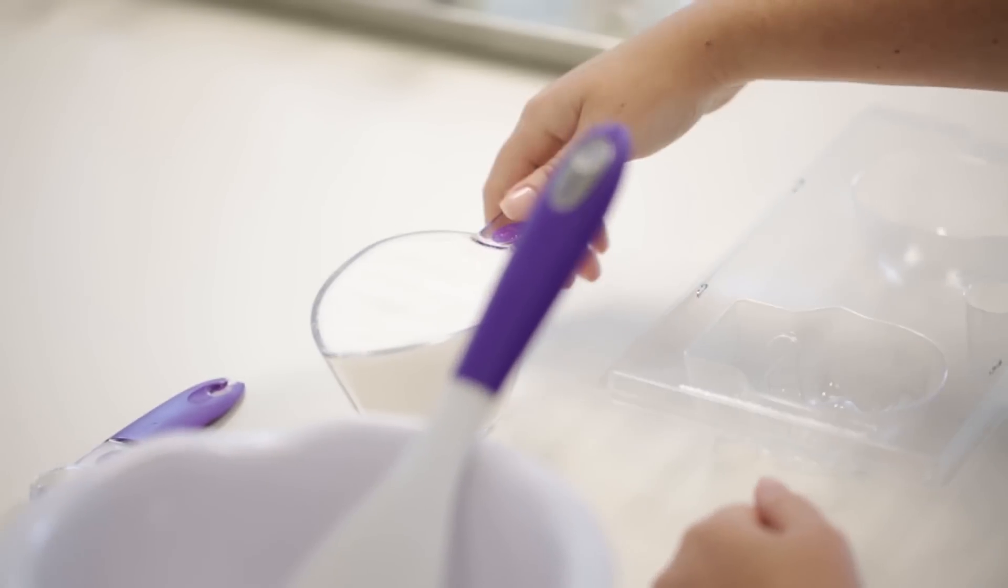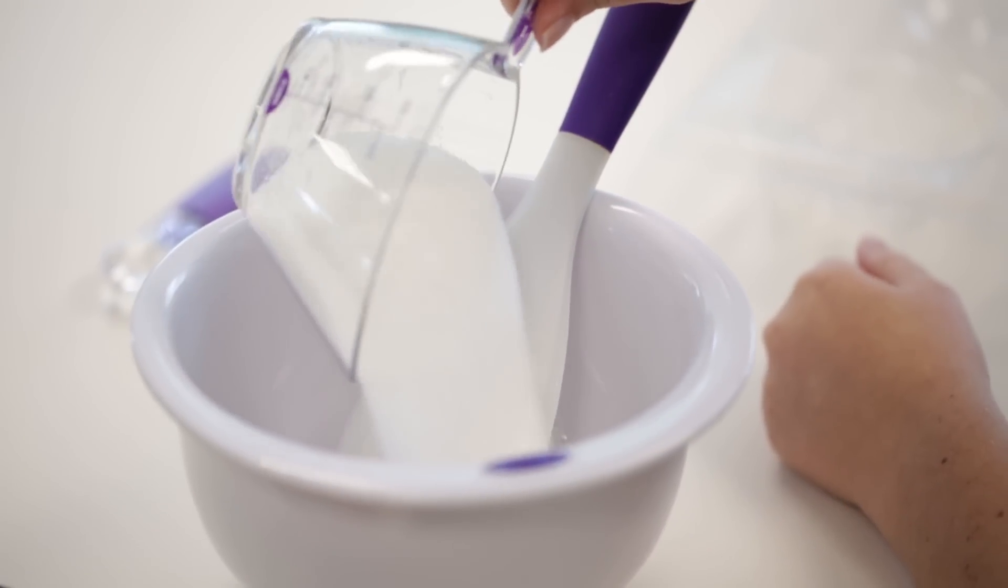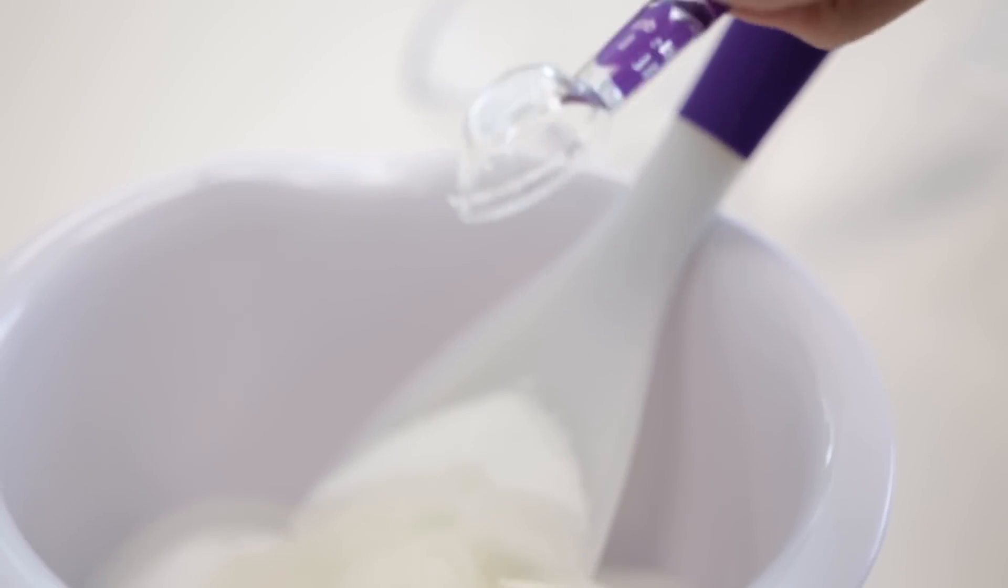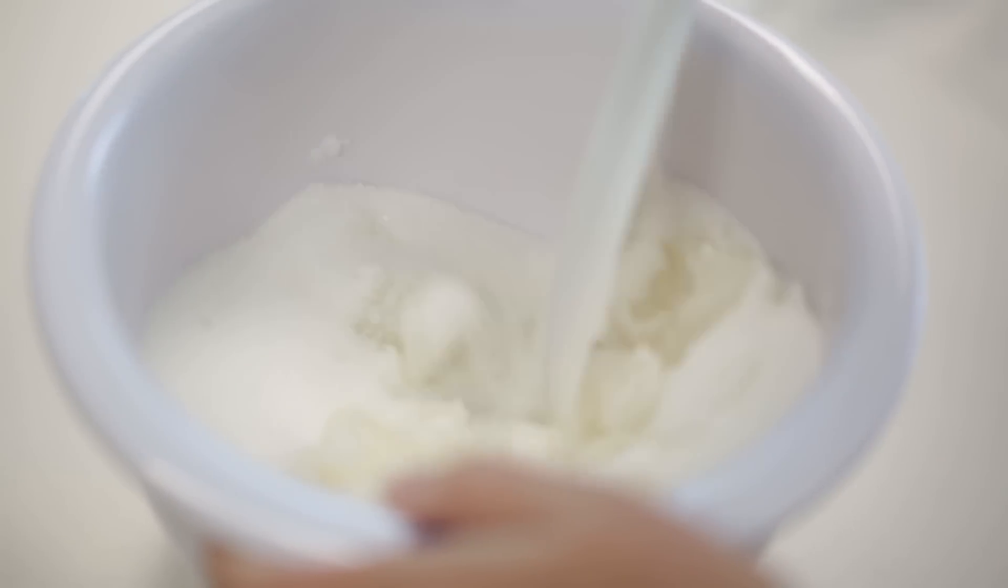In a small bowl, stir together the granulated sugar and the meringue powder. Add water and stir until the mixture is evenly moistened and feels like wet sand.